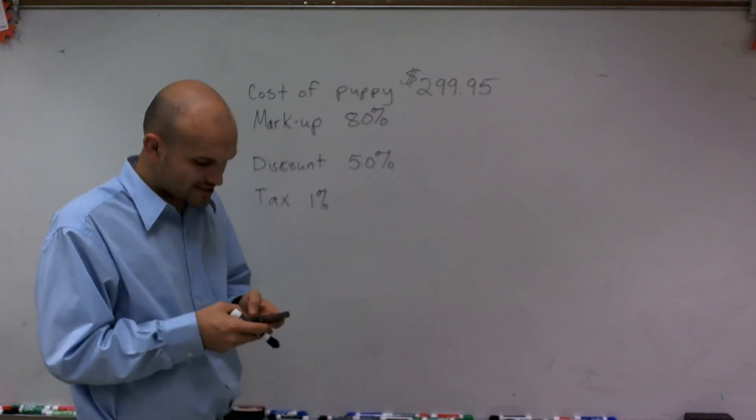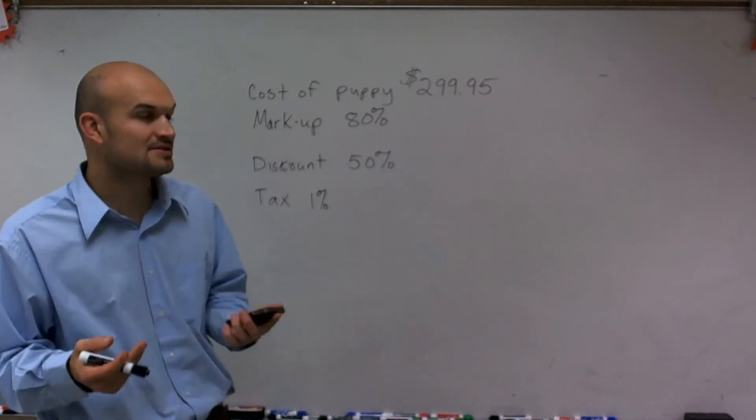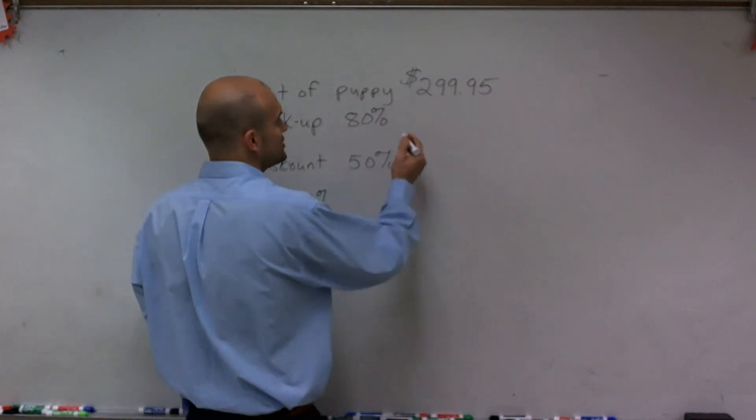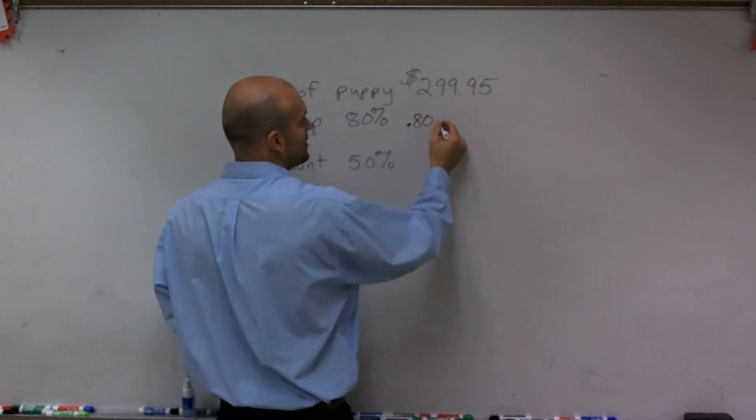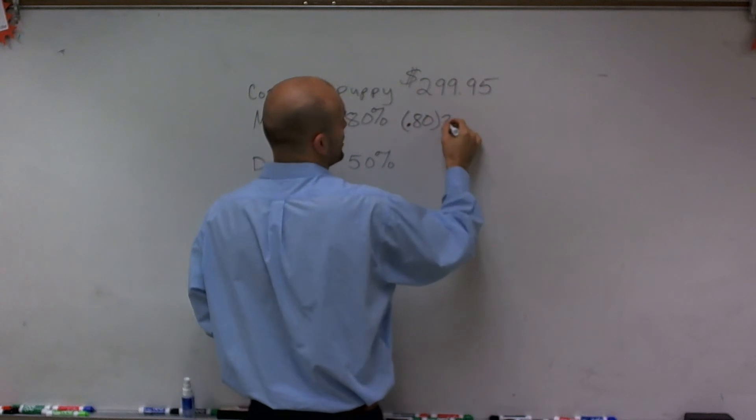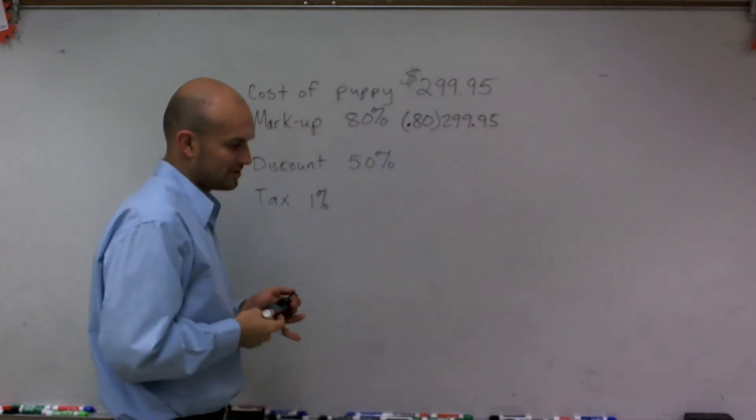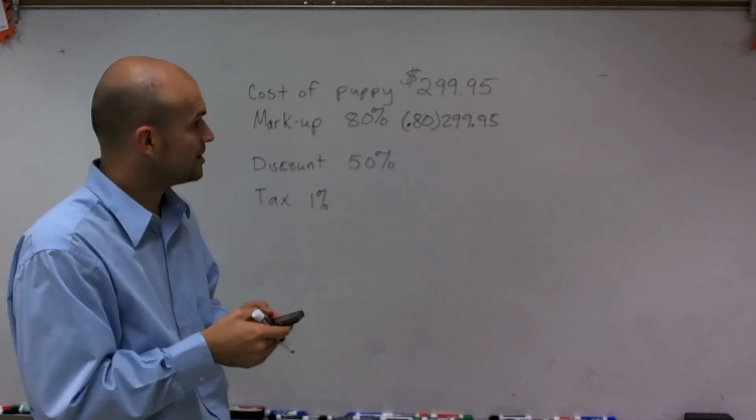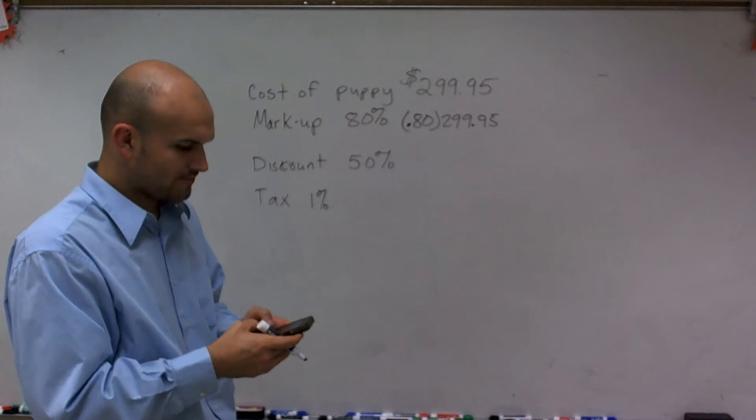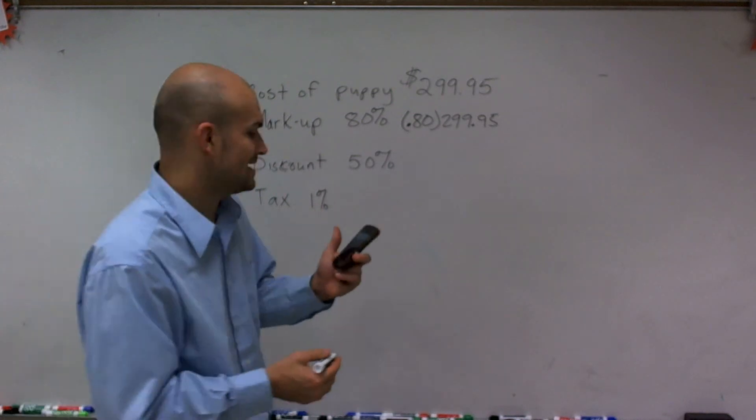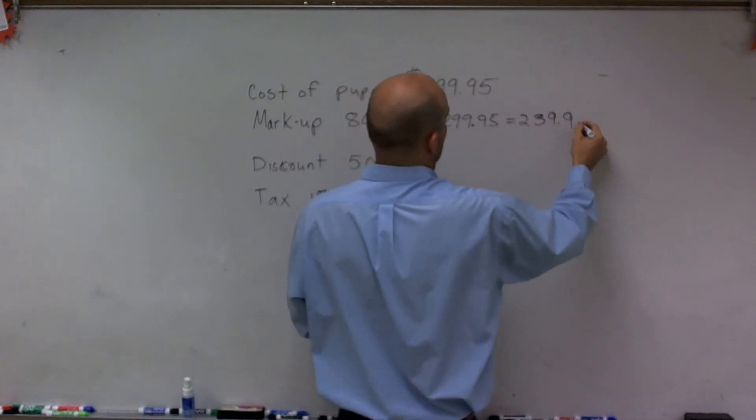So to find out what the new price is going to be, rather than doing proportions, I'm just going to take our markup price and rewrite it as a decimal and multiply it by our original price. This is going to be the amount that we're going to mark up. So when I multiply my price times our markup, we're going to have times .80 and I'm going to get $239.96.